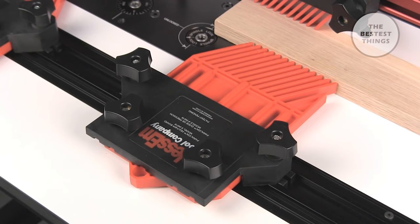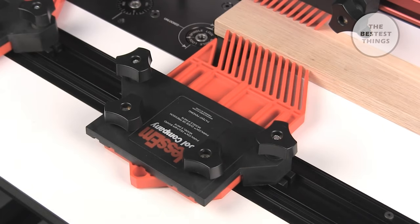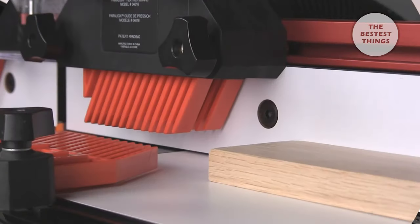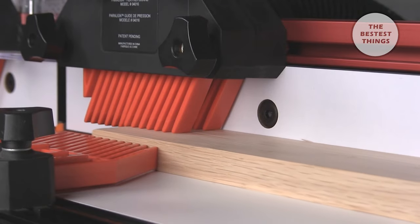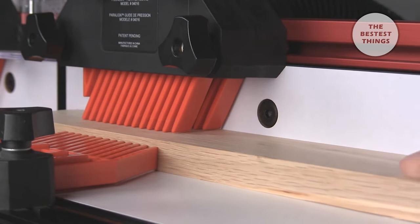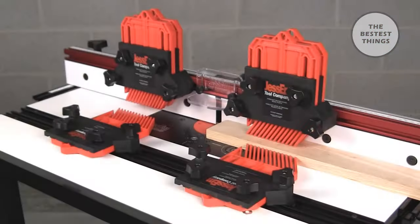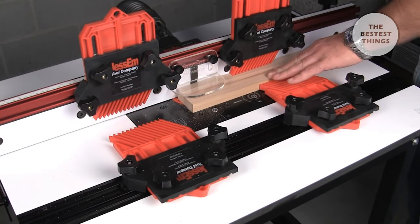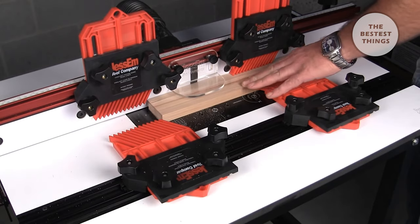Paraline Featherboards are reversible to suit the direction of feed. And the mounting bracket can be reversed to allow greater range of adjustment. They can even be stacked for greater control. Bring a whole new level of safety, precision, and convenience to your routing with Paraline Featherboards.